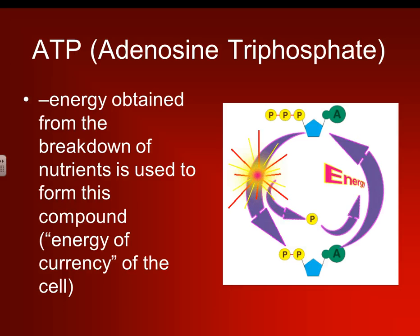ATP, or adenosine triphosphate, is a very important chemical within our body — basically energy. The energy obtained from the breakdown of nutrients is used to form this compound. So all of our proteins, carbohydrates, and fats — all the food that we take in — is broken down into ATP, and ATP is what gives us energy within our body.